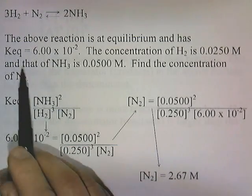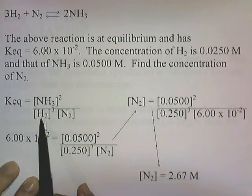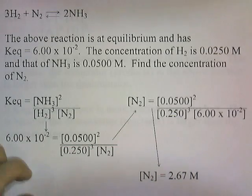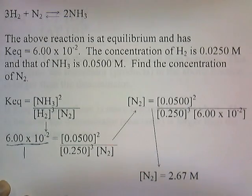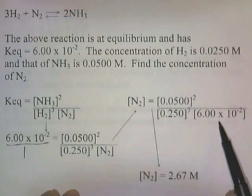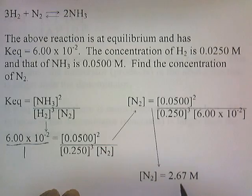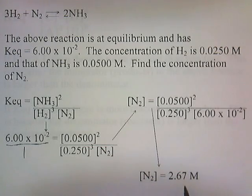Now substitute the known values: Keq is 6×10⁻², concentration of NH3 is 0.05, concentration of H2 is 0.025 cubed, and N2 is the unknown. Rearranging by cross-multiplying and solving for N2, you get N2 equals 0.0500 squared divided by 0.025 cubed times 6×10⁻². Multiplying this out gives a concentration of N2 equal to 2.64 molar. So if the concentrations of H2 and NH3 are 0.025 and 0.05 and the system is at equilibrium, then the concentration of N2 must be 2.64 molar.